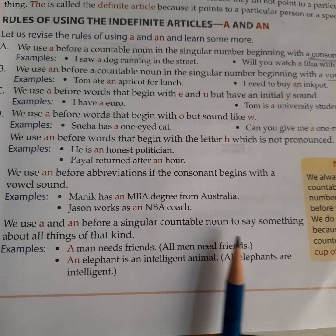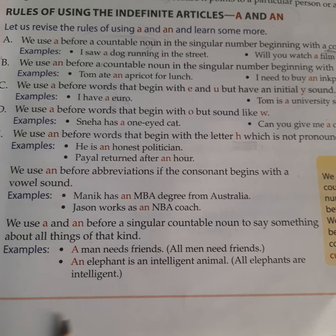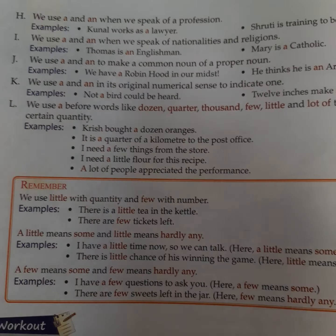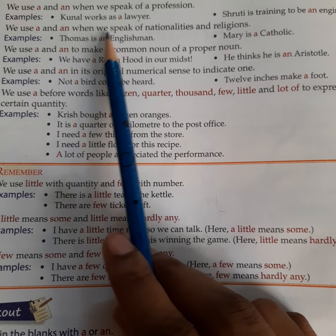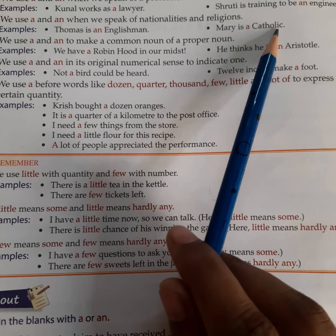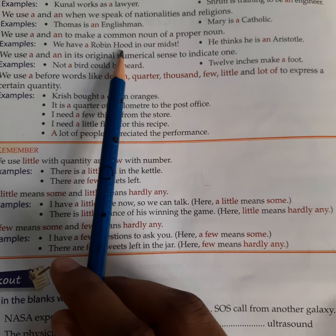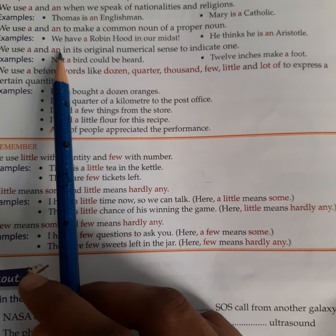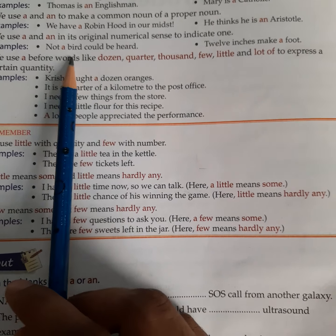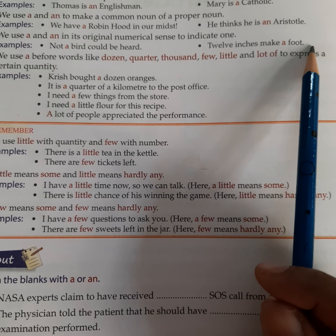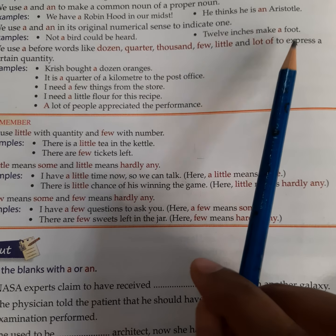We use A and An for a singular countable noun to say something about all things of that kind: 'A man needs a friend,' 'An elephant is intelligent.' We can also use A and An in professions, nationalities and religions — 'an Englishman,' 'a Catholic.' We use them to make common nouns of a proper noun, like 'a Robin Hood.' We also use A and An in their original numeral sense to indicate one: 'A bird could be heard,' 'Twelve inches make a foot.' We use A before words like dozen, quarter, thousand, few, little, and lot of to express a certain quantity.